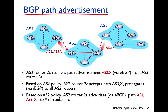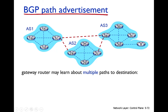If router 1C wants to transmit data to X, it first goes to the next hop. Once 1C receives this information, it also announces it to all routers within its network using the iBGP protocol session.